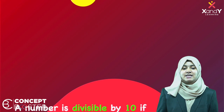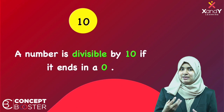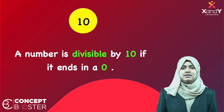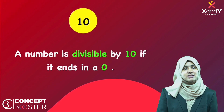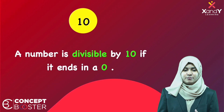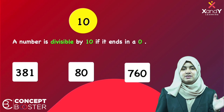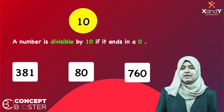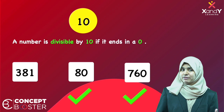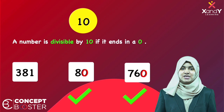Next, we have the divisibility rule for 10. It is very easy — a number is divisible by 10 if it ends with 0. For example, from 381, 80, and 760 — 760 ends with 0, so it is divisible by 10.